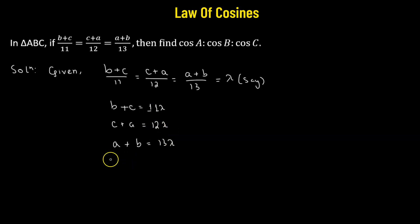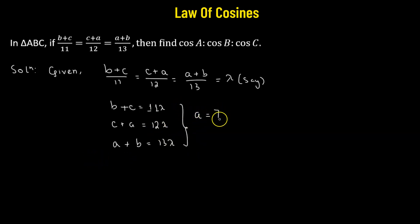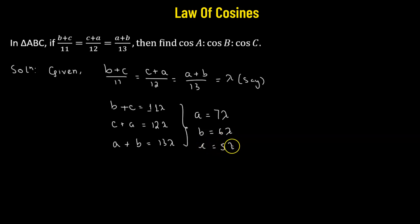Now using standard algebraic techniques, we can find out the value of A, B, and C. So A comes out to be 7 lambda, B comes out to be 6 lambda, and C comes out to be 5 lambda. Now that we have the values of A, B, and C, we can easily find the values of cosine A, cosine B, and cosine C.